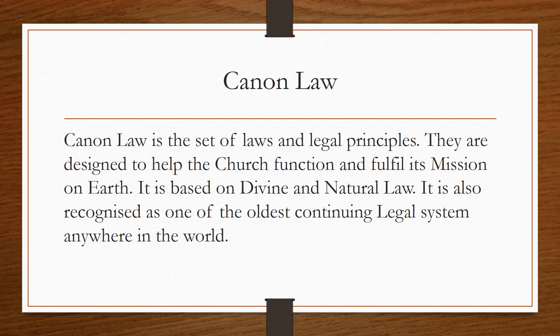Canon Law is how things are run and the rules and procedures associated with that. It's based on divine and natural law — one of the oldest historical continuing legal systems anywhere in the world. A great example of how Canon Law operates is the behaviour and actions of priests and religious and how they are ordained. But it also can apply from a civil point of view on the annulment process for marriage for Catholics.